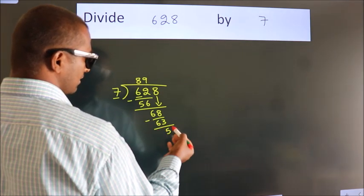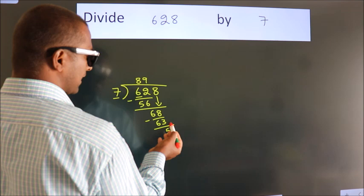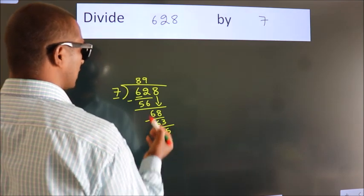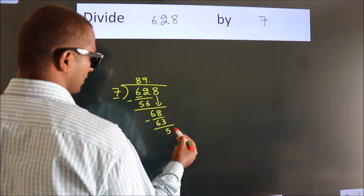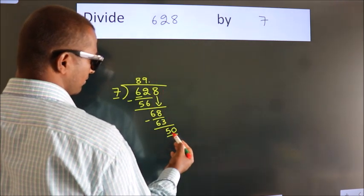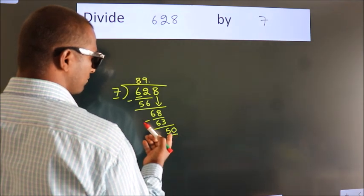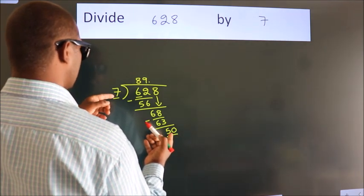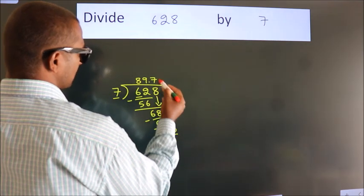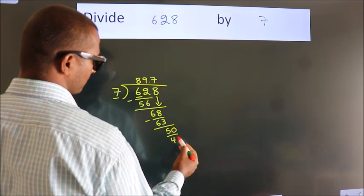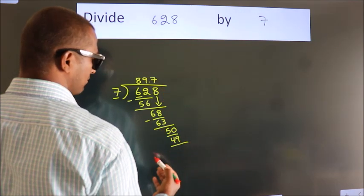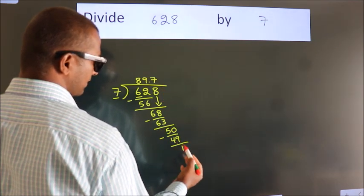After this, no more numbers to bring down. So what we do is we put a dot and take 0. So 50. A number close to 50 in the 7 table is 7 times 7, which is 49. Now we subtract. We get 1.